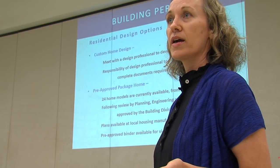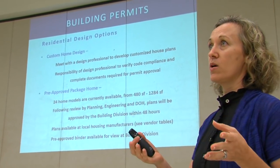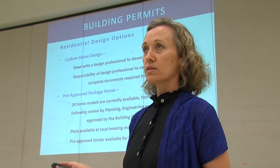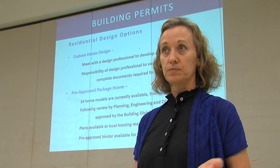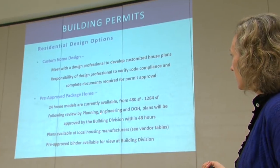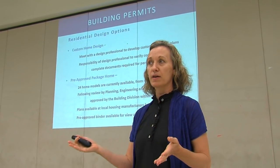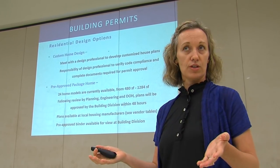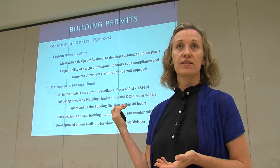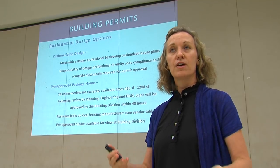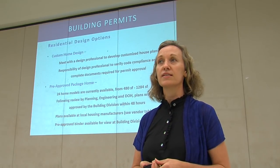Pre-approved package home is something that's available now. We currently have 24 home models available from 480 square feet up to larger sizes — roughly from one bedroom up to four bedroom size homes. With a pre-approved package home, it's pre-approved by Building Division, so following review by Planning, Engineering, and Department of Health, the plans are approved by Building Division within 48 hours. Those plans are available at local housing manufacturers, and the vendors are here at this event — you can go meet with them to see the various 3D renderings and ask questions about the pre-approved package homes.